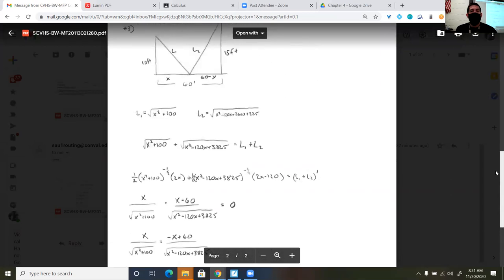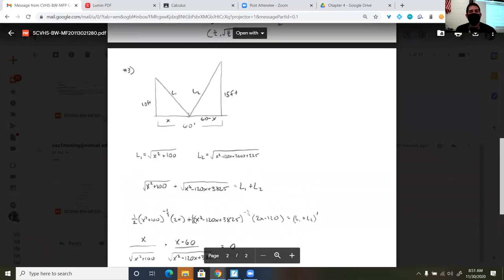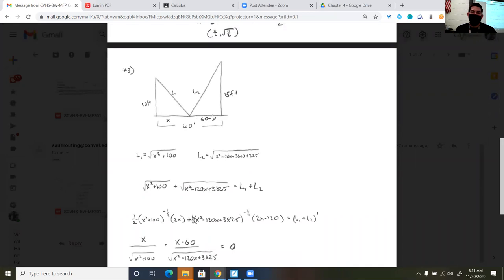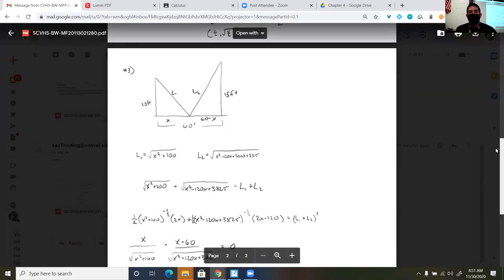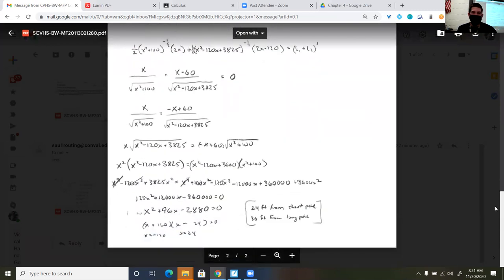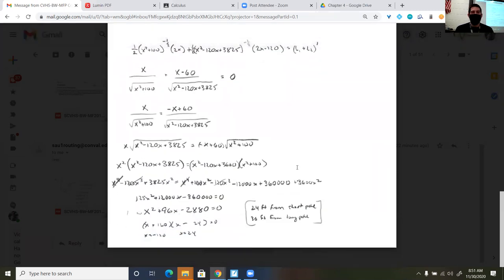So what does that mean? Well, x was the distance from the shorter pole. And 60 minus x would have given me the distance from the longer pole. So the two answers you could say is 24 feet from the shortest pole or 36 feet from the longest pole. I'm just going to take a look at the problem just one more time. It does just say where should it be placed. So it didn't specifically say that it had to be from the shortest or the longest. So either answer would work.